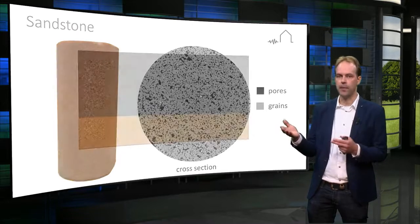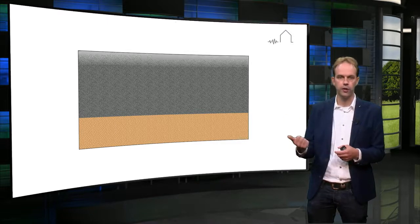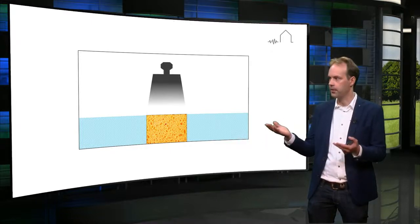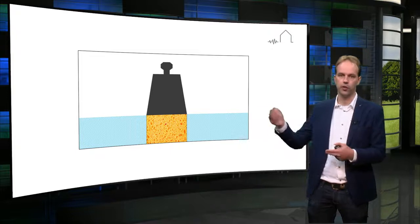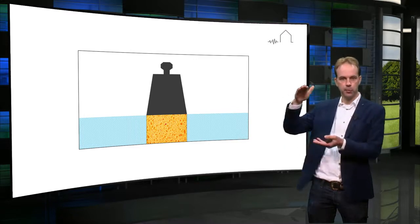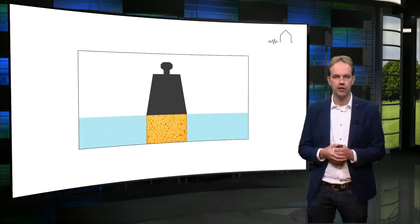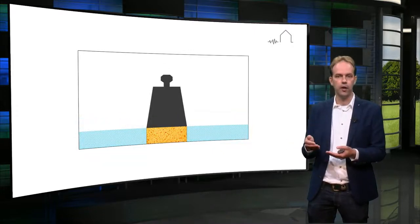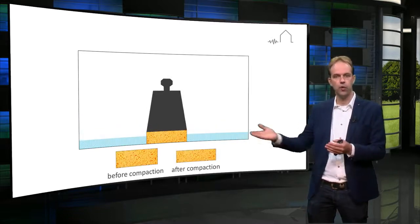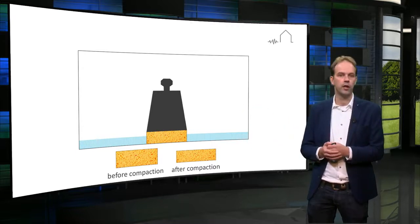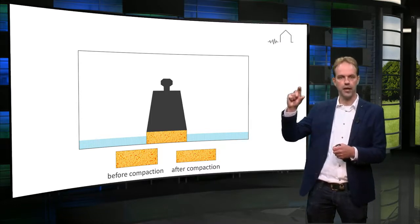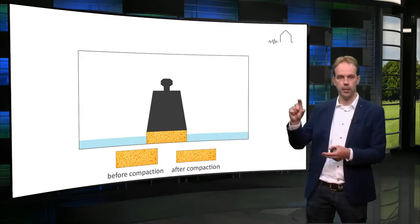We can visualize what happens below Groningen with an experiment consisting of a sponge, some water, and a weight. The sponge represents the sandstone, the water represents the gas, and the weight is the 3 km of rock above the reservoir. When the weight is placed on the sponge, it makes the sponge thinner — it compacts it. Since the pores of the sponge are still filled with water, the water resists some of the load. If we now start extracting gas — in other words, remove the water from the sponge — the water pressure reduces and the water pushes back less strongly than before, resulting in additional compaction of the reservoir, and the reservoir layer becomes even thinner.